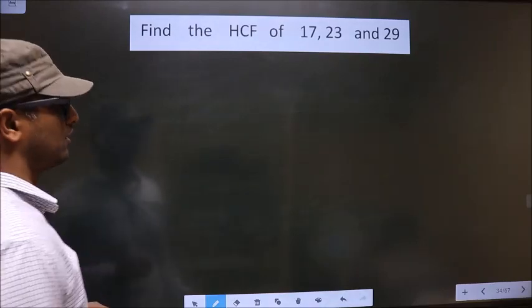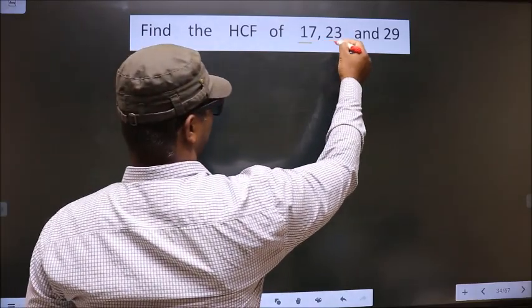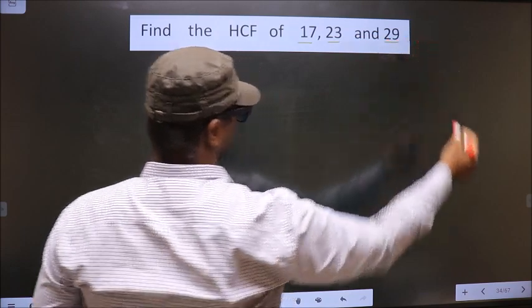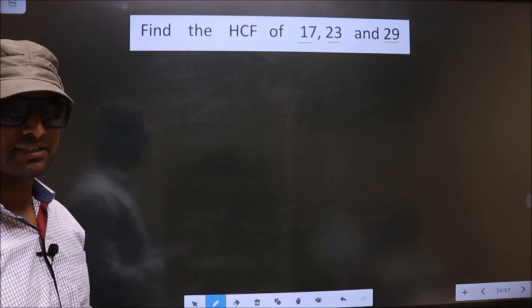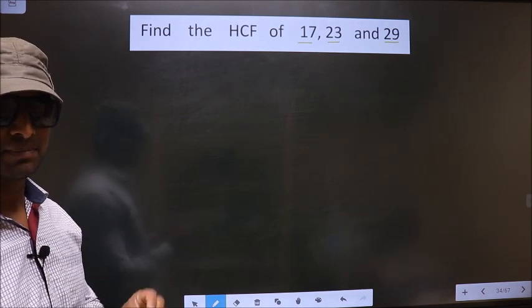Find the HCF of 17, 23 and 29. To find the HCF, first we should do prime factorization of each number separately.